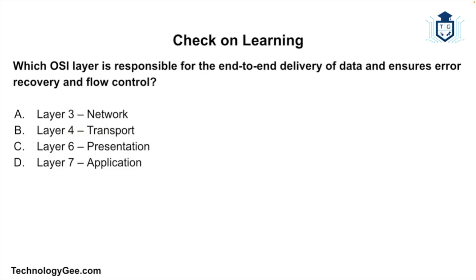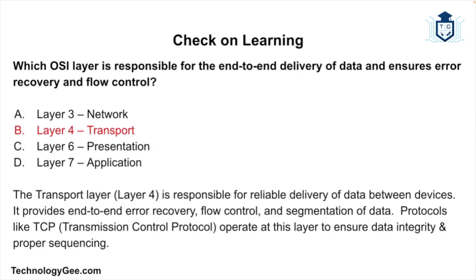Question 3: Which OSI layer is responsible for the end-to-end delivery of data and ensures error recovery and flow control — Layer 3, Layer 4, Layer 6, or Layer 7? The correct answer is Layer 4, the Transport layer. The Transport layer is responsible for reliable delivery of data between devices, providing end-to-end error recovery, flow control, and segmentation of data. Protocols like TCP (Transmission Control Protocol) operate at this layer to ensure data integrity and proper sequencing.